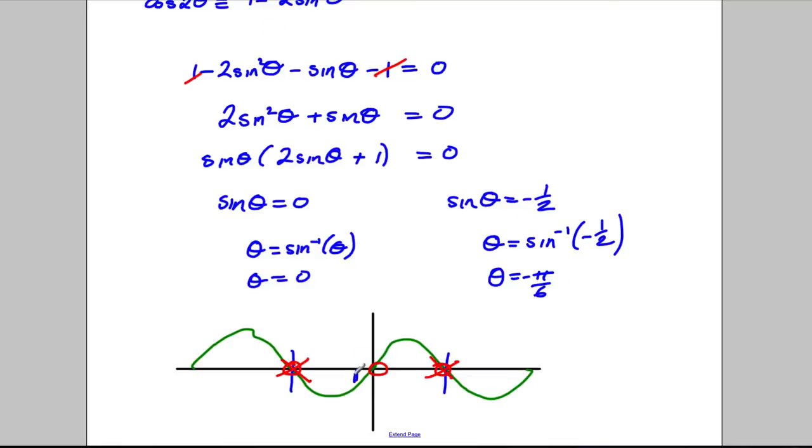However, this one, negative pi by 6 is going to be here like that. It's obviously pi by 6 back from 0. So there'll be one here,